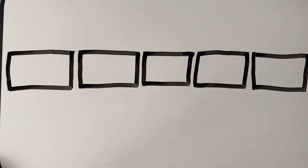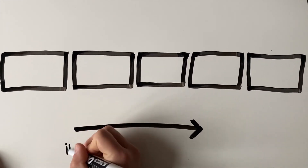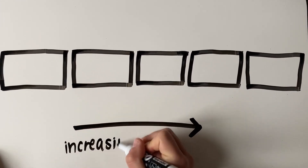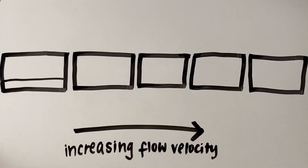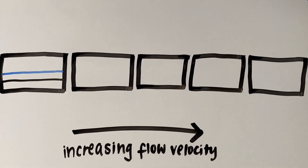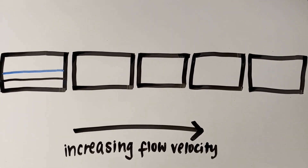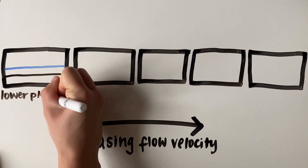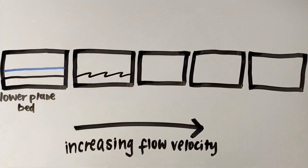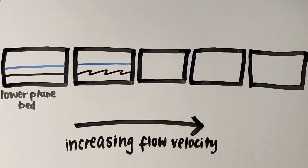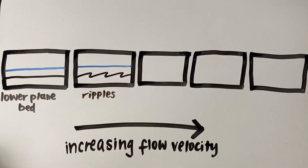These are called bedforms because they form at the bed of the river, where the water interacts with the sediment. There is a sequence of bedforms associated with different flow velocities of a unidirectional current. Lower flow regime bedforms form under slower or subcritical flow. These include lower plane beds, which look like flat, tabular surfaces of sand or mud, ripples, and dunes.